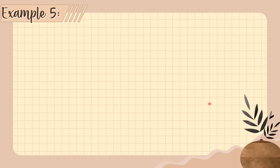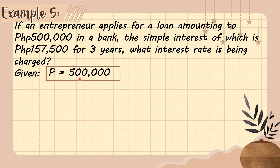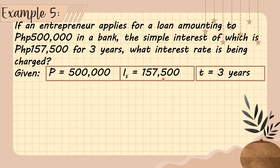Example number five: If an entrepreneur applies for a loan of 500,000 pesos in a bank, and the simple interest is 157,500 pesos for three years, what interest rate is being charged? The given: principal = 500,000 pesos, simple interest = 157,500 pesos, time = three years. We need to find the rate.